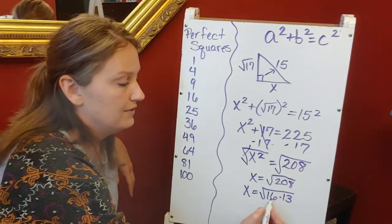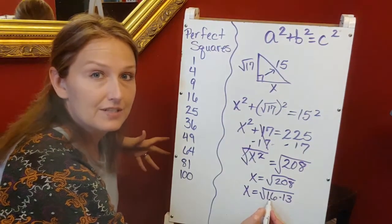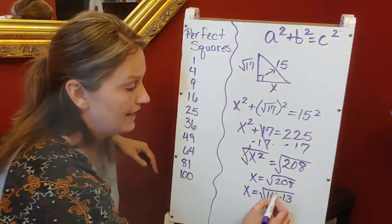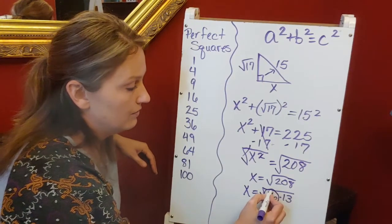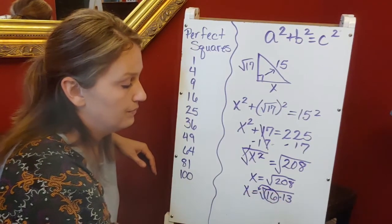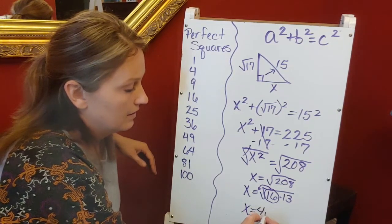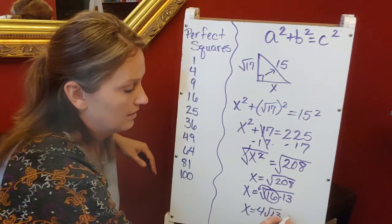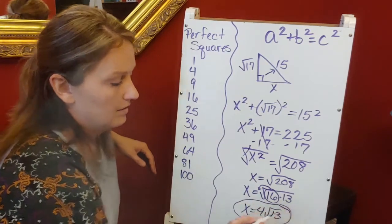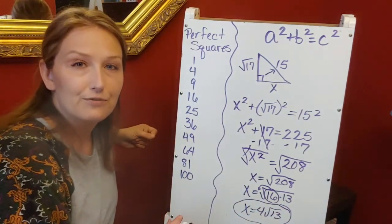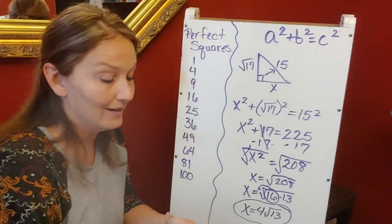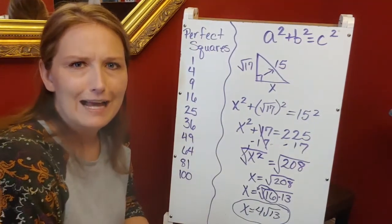Now I can take the square root of 16. The square root of 16 is 4, so I'm going to take this square root and pull it outside of the radical symbol. x = 4√13. That's all of Day 12. Happy mathing!